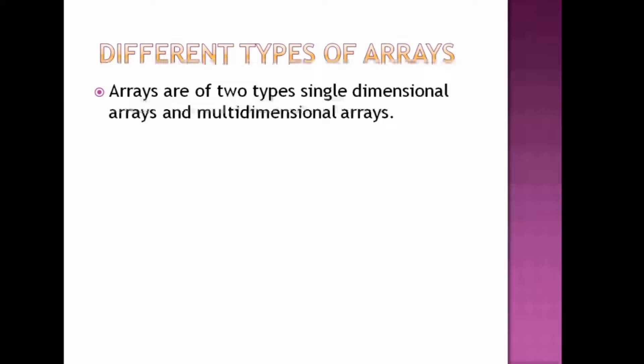There are two types of arrays: one is a single-dimension array and the second is a multi-dimension array — for example, a two-dimension array or a three-dimension array, any more than one dimension is a multi-dimension array. First we will see what a one-dimension array means. Once we are familiar with one-dimension arrays, we can easily move to two-dimension and three-dimension arrays.